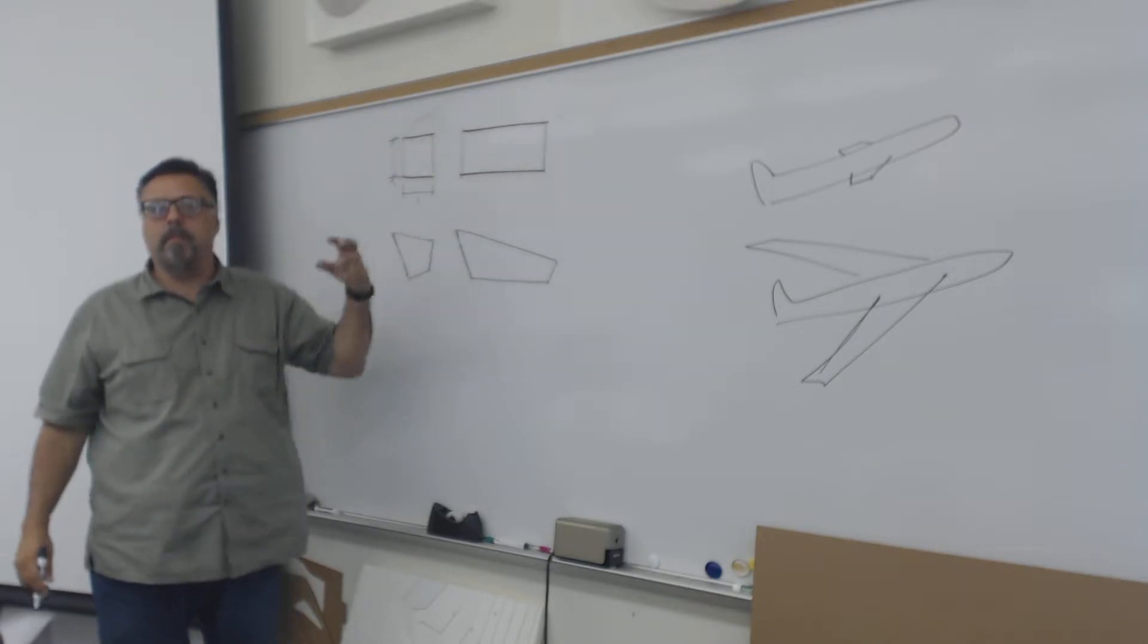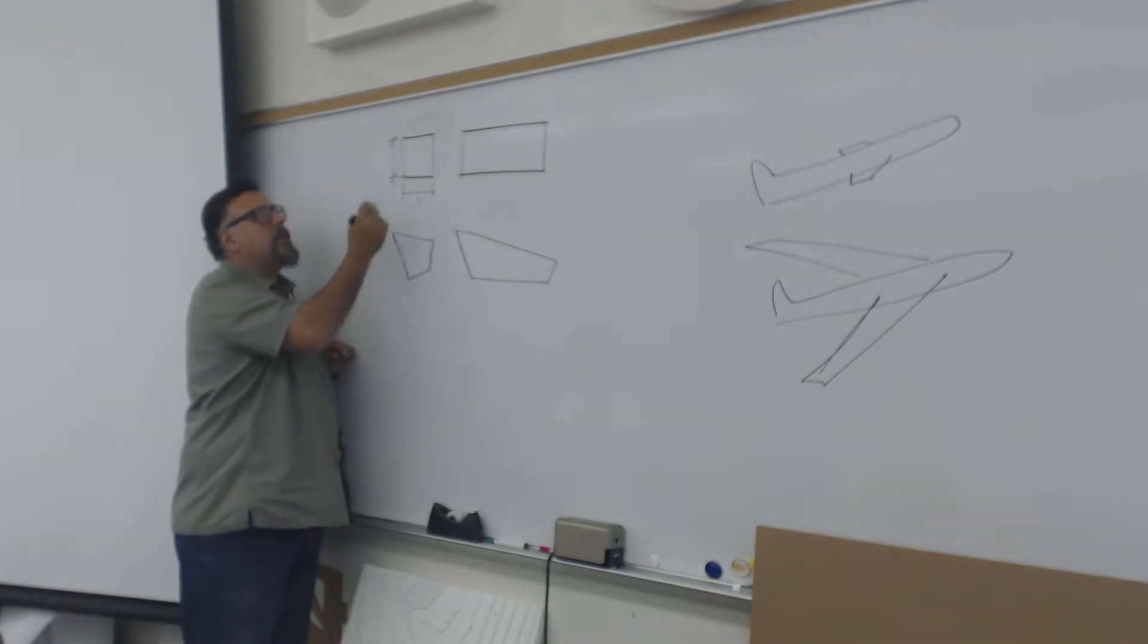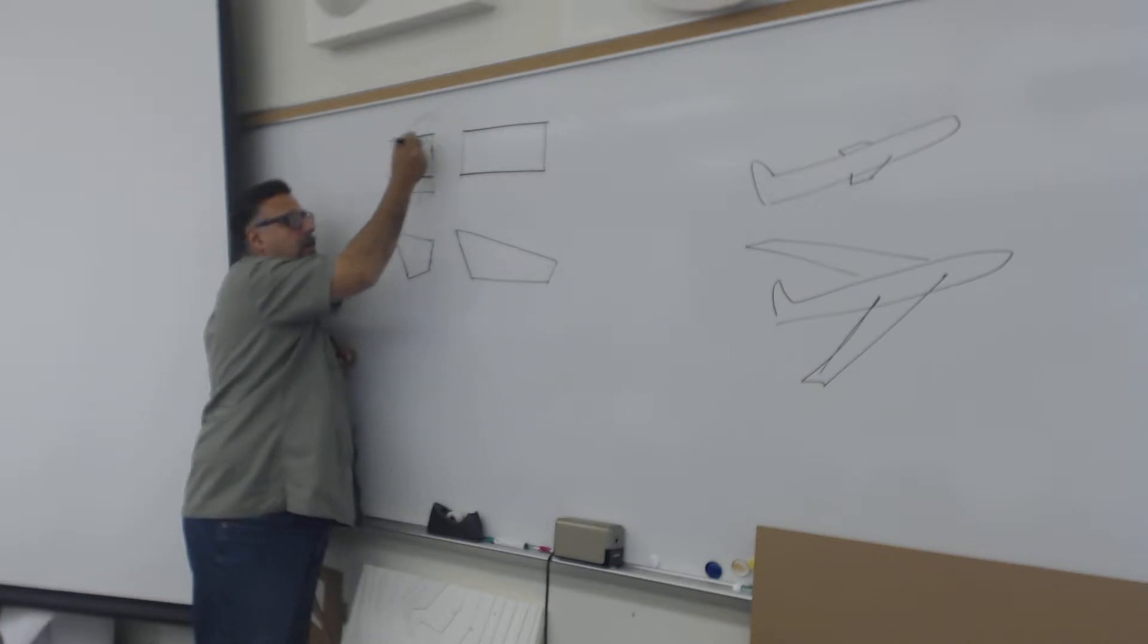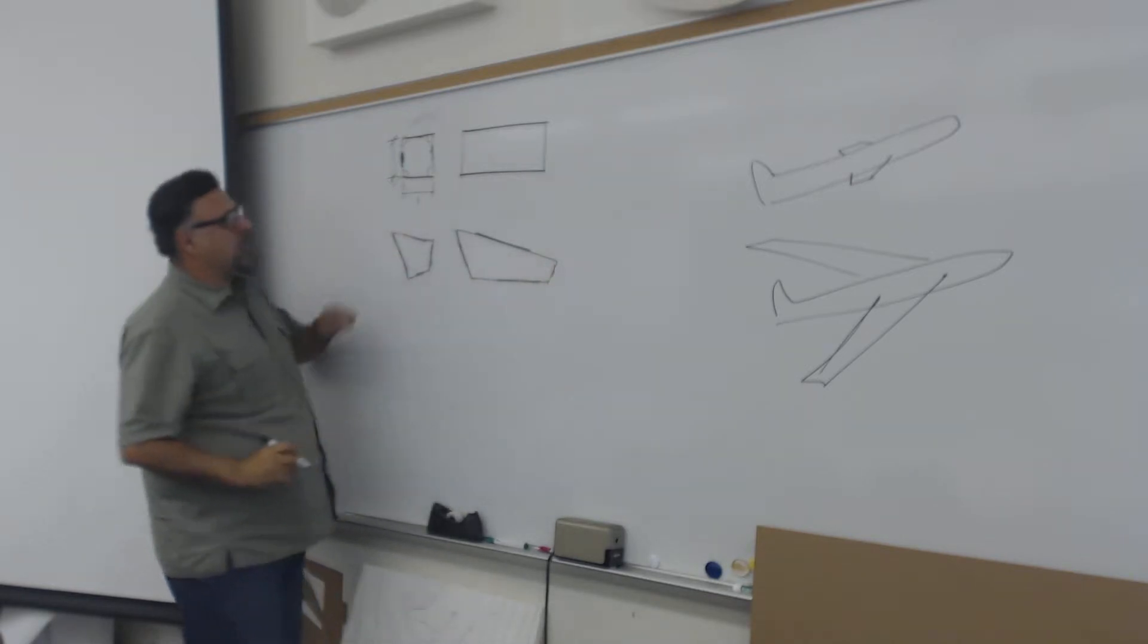So the other thing that we talked about is not using 90-degree angles and not having parallel edges, right? And so here we see the use of non-parallel edges in both an elongated and a foreshortened version.